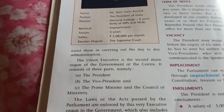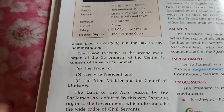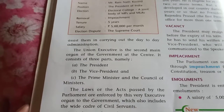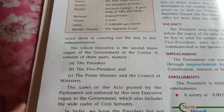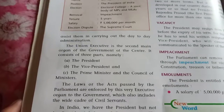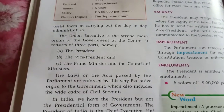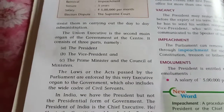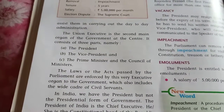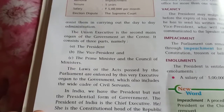The union executive has three parts: President, Vice President, Prime Minister, and the Council of Ministers. The present president — who is the present president? — is Mr. Ramnath Kovind.